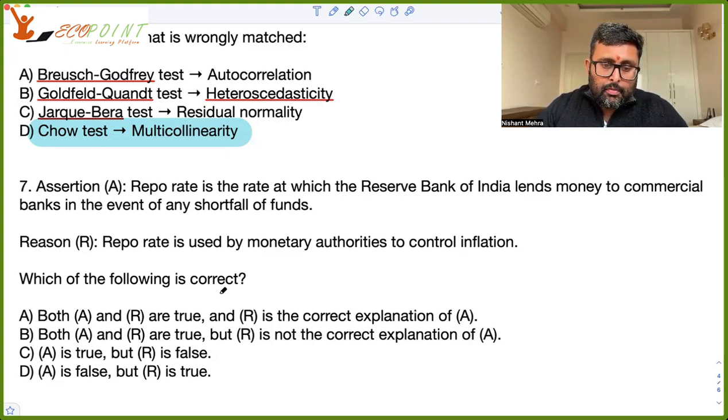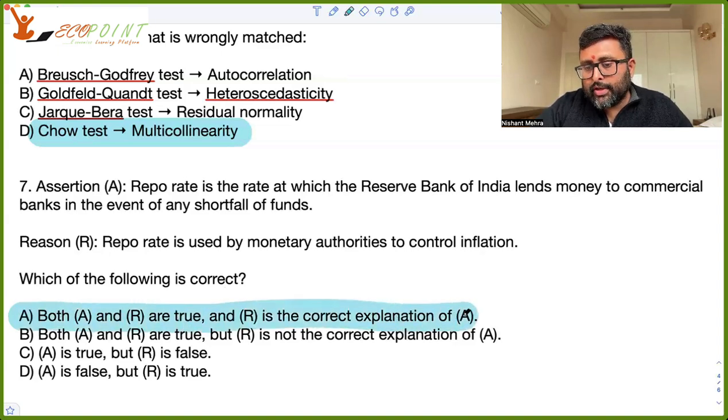And it is used by monetary authorities to control inflation in a way. If inflation is high, so RBI is going to increase the repo rate. And hence, there will be lesser money supply in the economy, which is going to reduce inflation. So yes, both A and R are true. And R is the correct explanation of A. So whenever you have assertion reasoning question, always check assertion and reasoning separately first. And then try to think is reasoning, explaining the assertion.